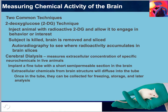Cerebral dialysis is another way to measure chemical activity in the brain, and this measures extracellular concentration of specific neurochemicals in live animals. This requires the implementation of a fine tube with a short semipermeable section in the brain. By semipermeable, we mean that it allows certain substances to pass through it but not others — especially allowing the passage of a solvent, the liquid in which a solute is dissolved to form a solution, but not of certain solutes. We are basically able to measure what chemicals were actively present in a particular brain region, and once collected they can be frozen for storage and analyzed later.